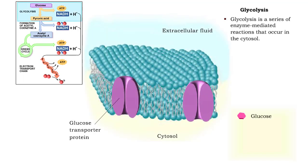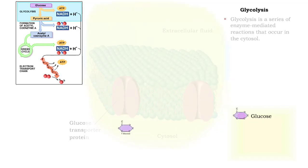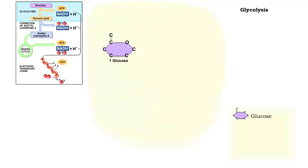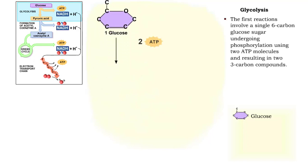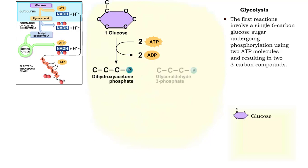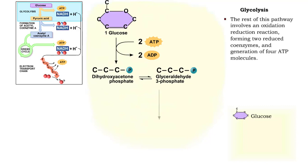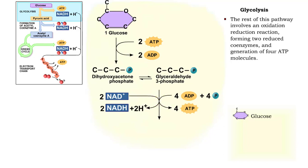Glycolysis is the first step of glucose catabolism and it occurs in the cytosol. The first part of glycolysis involves phosphorylating glucose and then breaking it into smaller phosphate molecules. The second part of glycolysis is the oxidation of the smaller phosphate molecules, thus producing reduced coenzymes and generation of ATP.